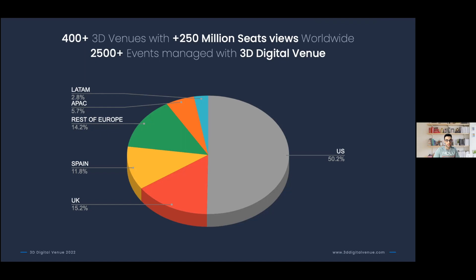In third position we have Spain. The rest of Europe — Italy, Germany, France and others — is also represented. We've started to have presence in Asia-Pacific, with partnerships with Ticket Tech in Australia and New Zealand, and with the AAG ticketing platform in Japan. We also have some presence in Latin America, though deploying digital services there is challenging because of pricing.